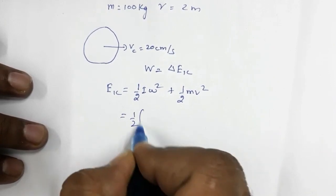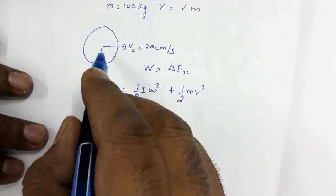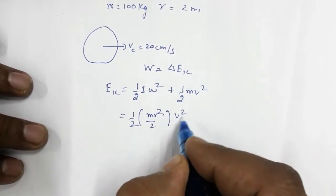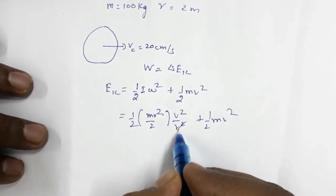So this is half moment of inertia of the disk, which is mr squared by 2 about the center point. Omega is v squared by r squared plus half mv squared. This r squared r squared cancels out.